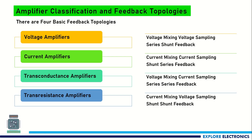These are the four different amplifier circuits we can get. The classification will be like this: we have voltage amplifiers, current amplifiers, transconductance amplifiers, and transresistance amplifiers. Depending on the feedback topology, we can expect an amplifier to amplify voltage or current, and it will behave as a transconductance or transresistance amplifier.